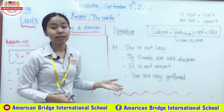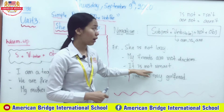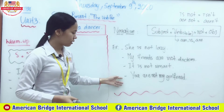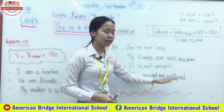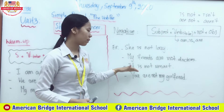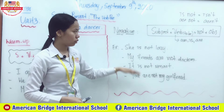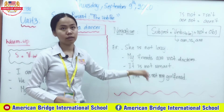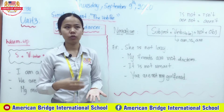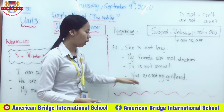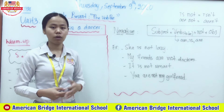Another example: 'It is not smart' — or 'It isn't smart.' Subject 'it' uses 'to be' form 'is,' because for 'he,' 'she,' 'it' we use 'is.' Then 'not,' then the object. Last example: 'You are not my girlfriend' — or 'You aren't my girlfriend.' Subject 'you' uses 'are'; you cannot say 'you is' or 'you am' — only 'you are.' Then 'not,' then the object, following the rule.